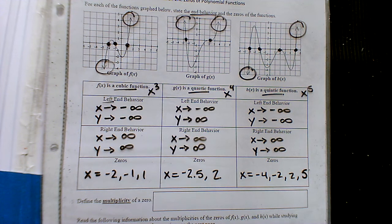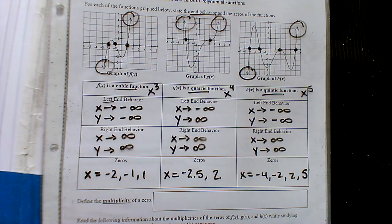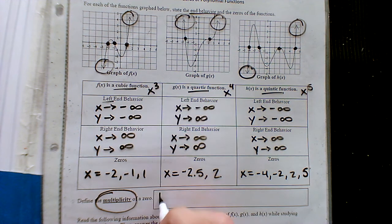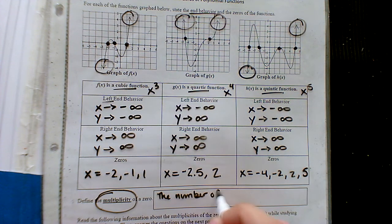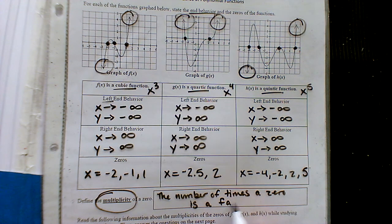We're going to spend today and tomorrow looking at these x-intercepts further. We have different types of x-intercepts. Looking at all of these graphs, the black dots are x-intercepts. But if you look at what the graph is doing at those spots, things start to change. To explore that relationship, we have to get familiar with a new vocabulary word: multiplicity. By definition, multiplicity is the number of times an x-intercept is a factor — how many times it goes in evenly and gives a remainder of zero.